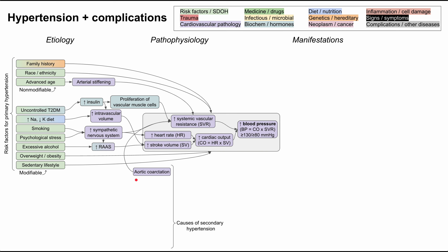One cause of secondary hypertension is aortic coarctation — a narrowing of the aorta that significantly increases systemic vascular resistance. Renal vascular disease involves narrowing of arteries going to the kidneys, which increases the renin-angiotensin-aldosterone system. In older men this tends to be renal artery stenosis from atherosclerosis, while in younger women it tends to be fibromuscular dysplasia, an inflammatory disorder causing arterial wall buildup. Either way, narrowed renal arteries raise RAS and elevate blood pressure.